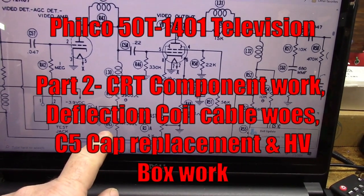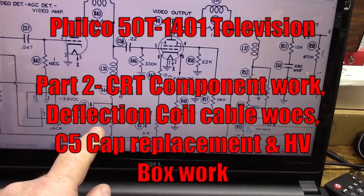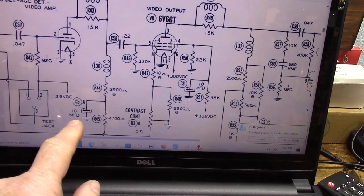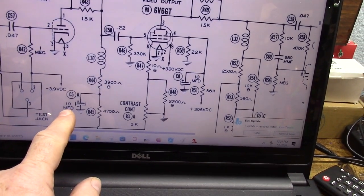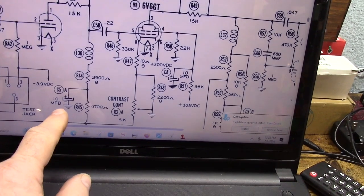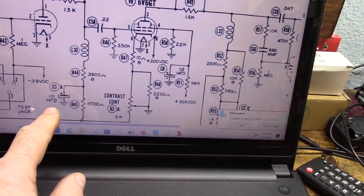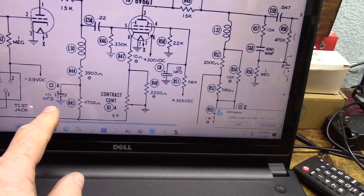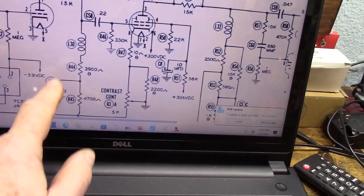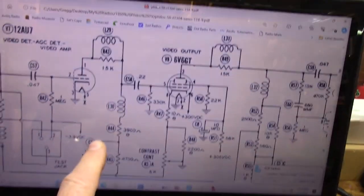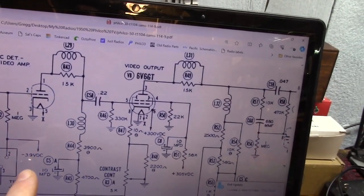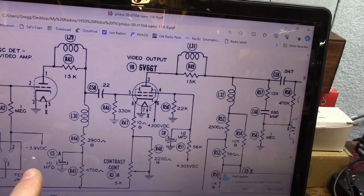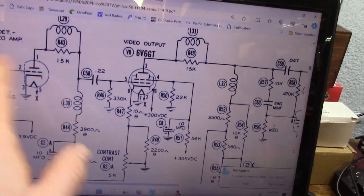I thought I'd show you the missing electrolytic capacitor, the C5 capacitor. I've been tracing it out. There's three parts to it, all 10 microfarad. The first part is part of the video detector and AGC amp circuit.